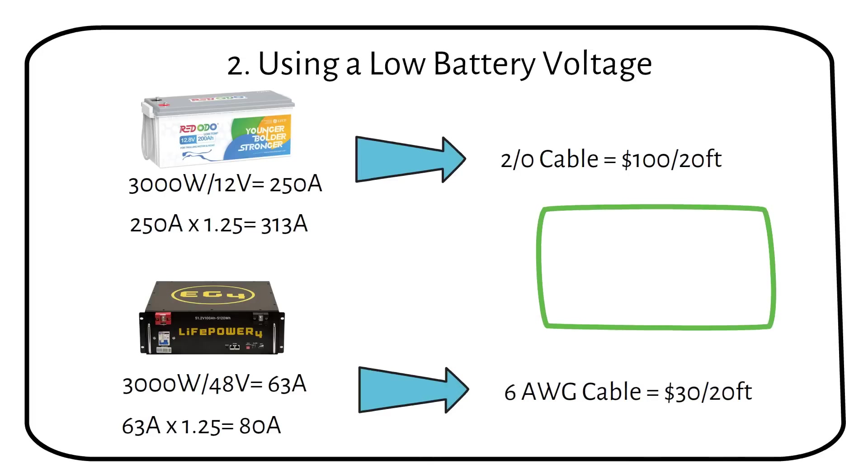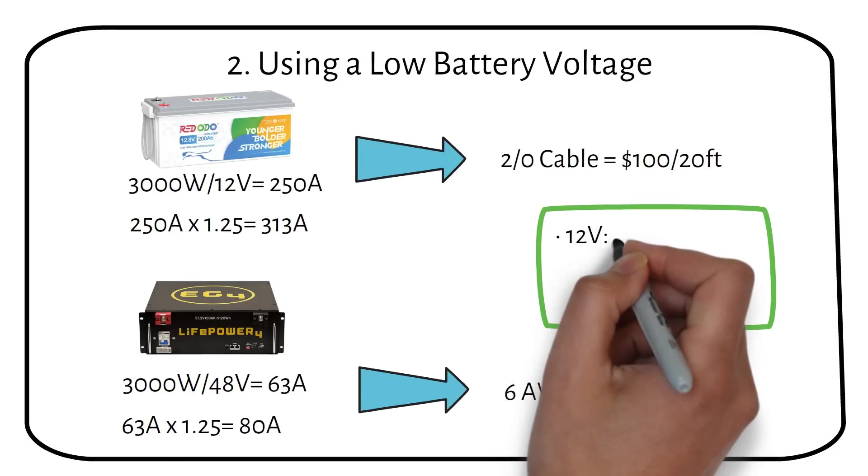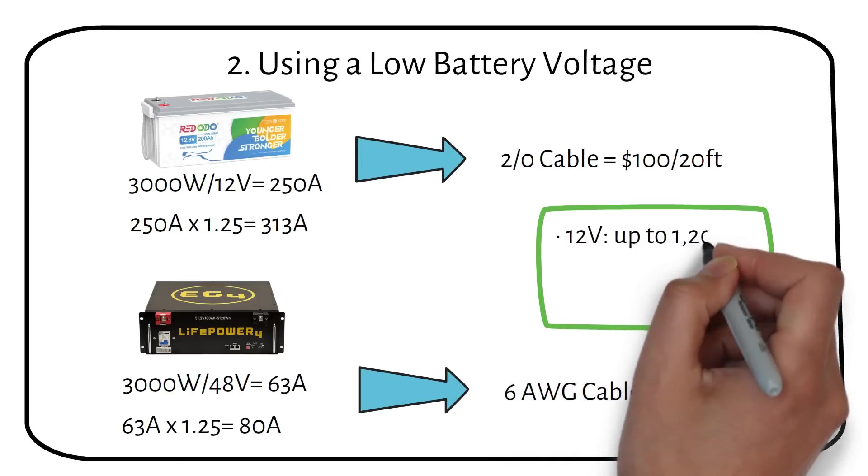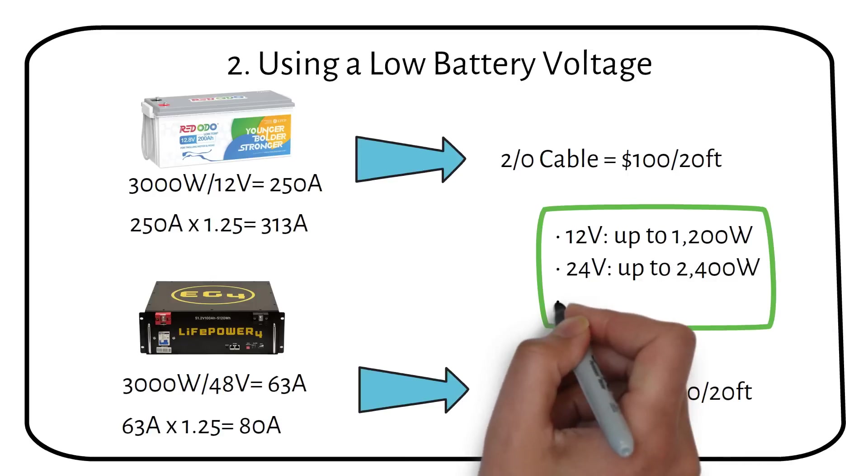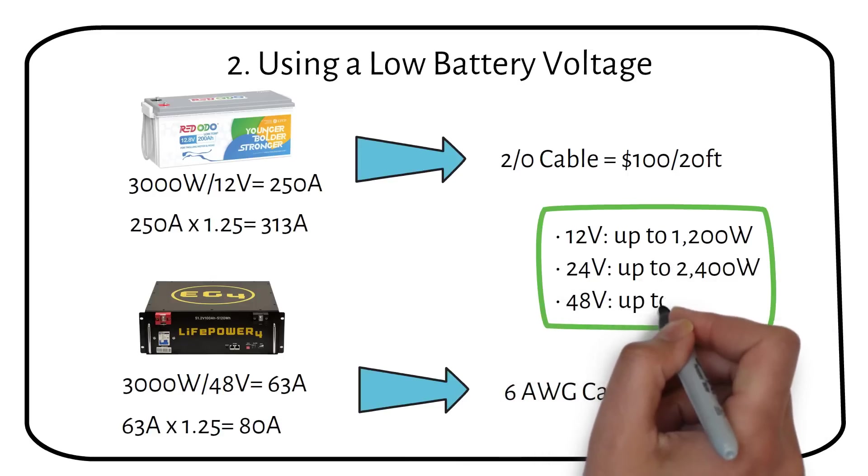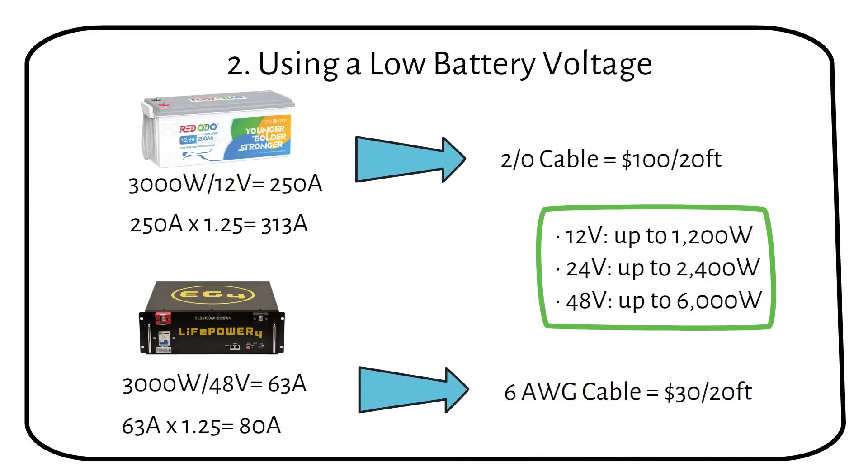Here are my recommendations for inverter and battery voltages. For a 12 volt battery, use inverters up to 1200 watts. For a 24 volt battery, up to 2400 watts. And for a 48 volt battery, up to 6 kilowatts.